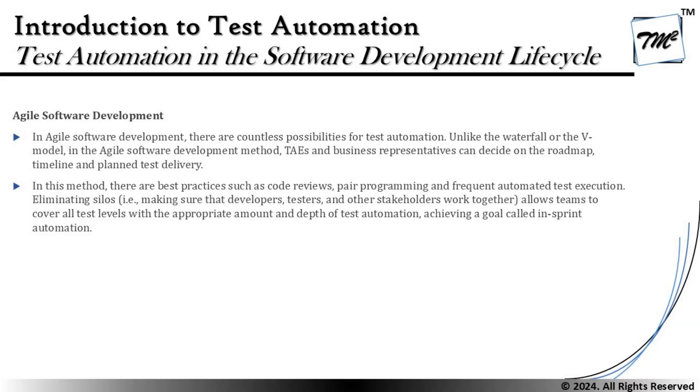In agile, best practices include code review, pair programming, and frequent automated test execution. Eliminating silos means making sure developers, testers, and stakeholders work together, allowing teams to cover all tests with the appropriate amount and depth of test automation, achieving a goal called in-sprint automation. Working closely together is important — we can help each other more easily compared to waterfall and V model, where teams worked more independently. Being close to the development team helps gather information and plan and execute test cases earlier in the lifecycle.